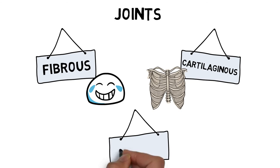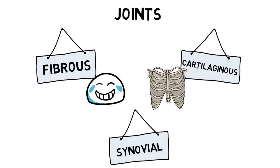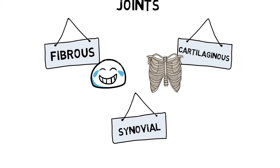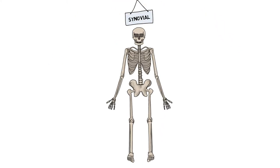And finally, synovial joints — the most common joint in the body. These joints produce synovial fluid that allows for a wide range of movements. There are six different types of synovial joints.